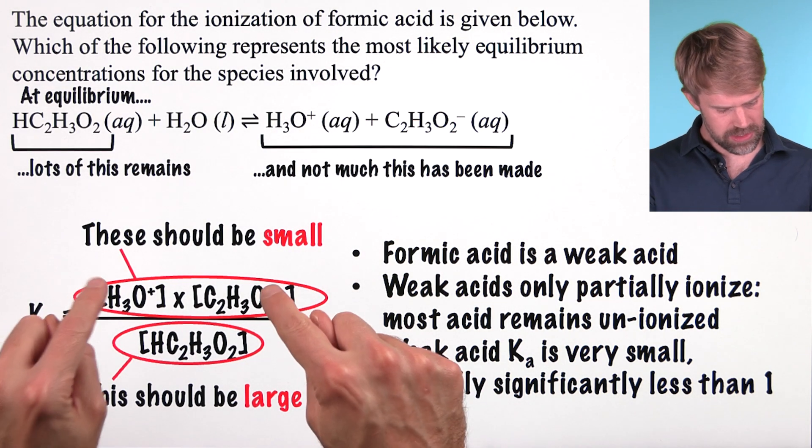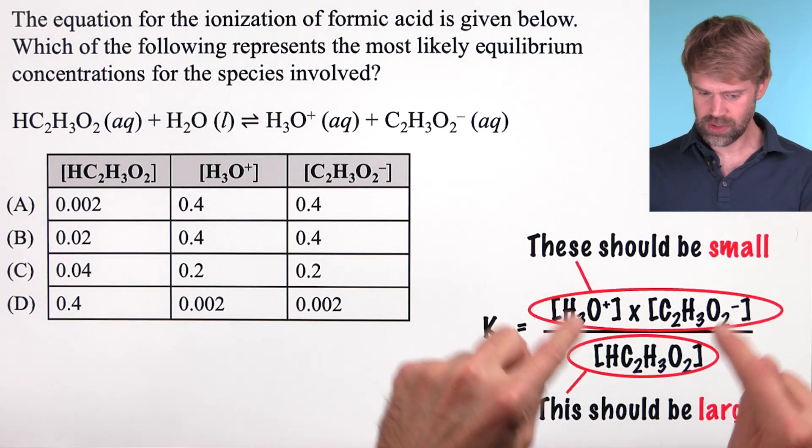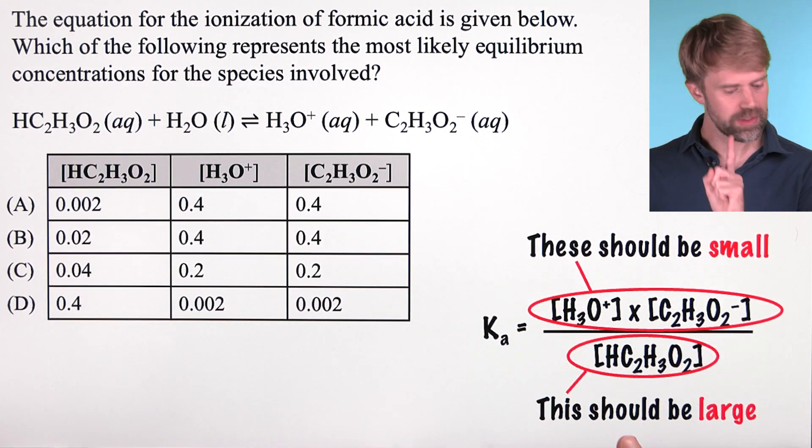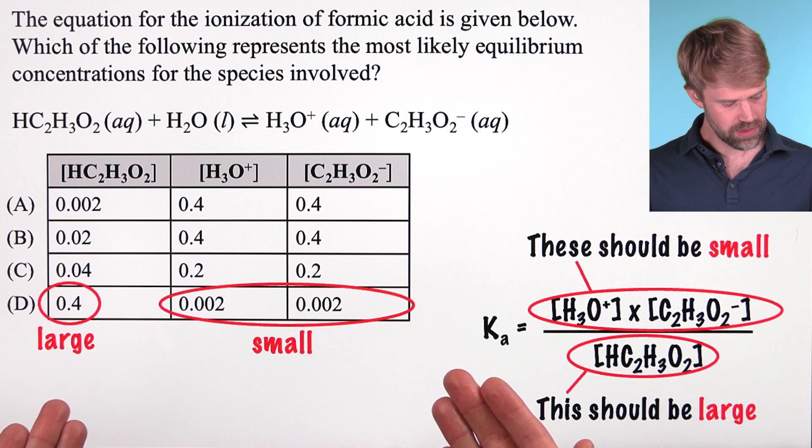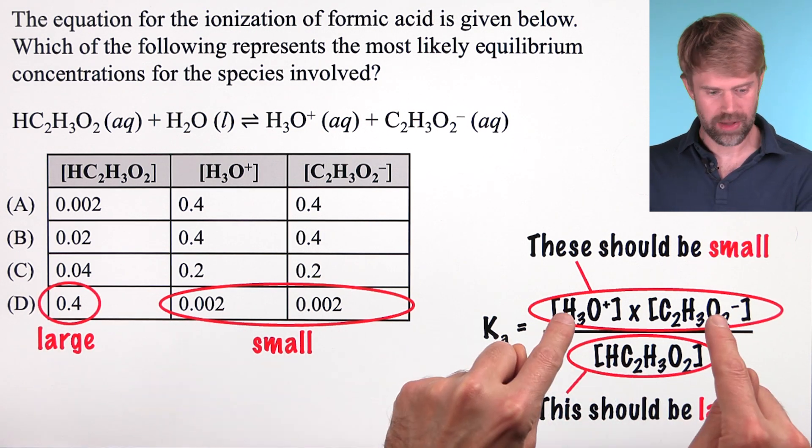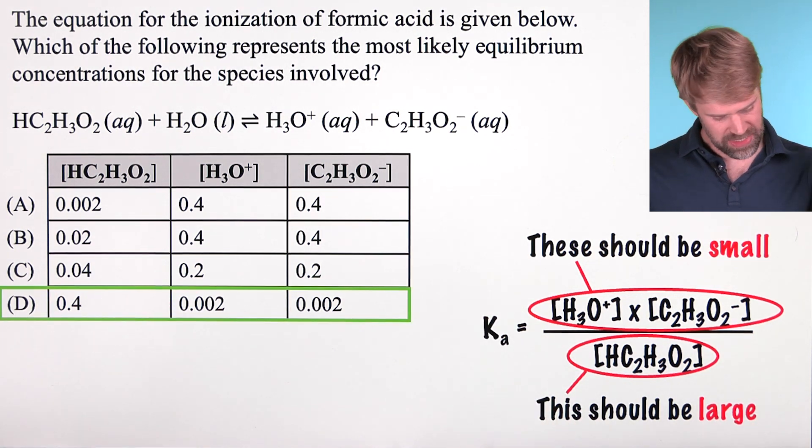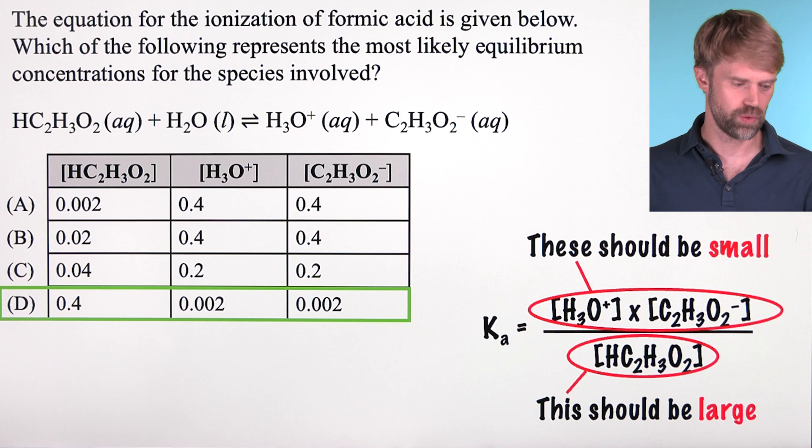Putting together everything we said. We know that these numbers should be small and this should be large. And if you look at the answer choices, there's only one that fits. Large value for this. Two small values for this. You don't even have to do the math. D is the only possible choice.